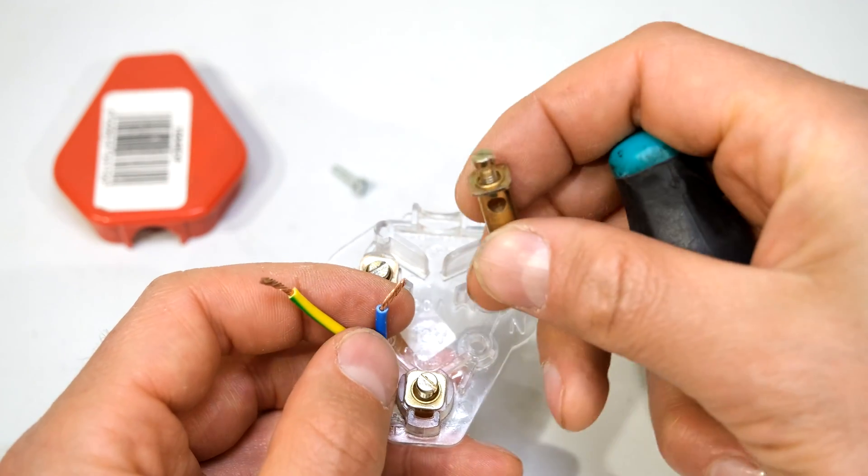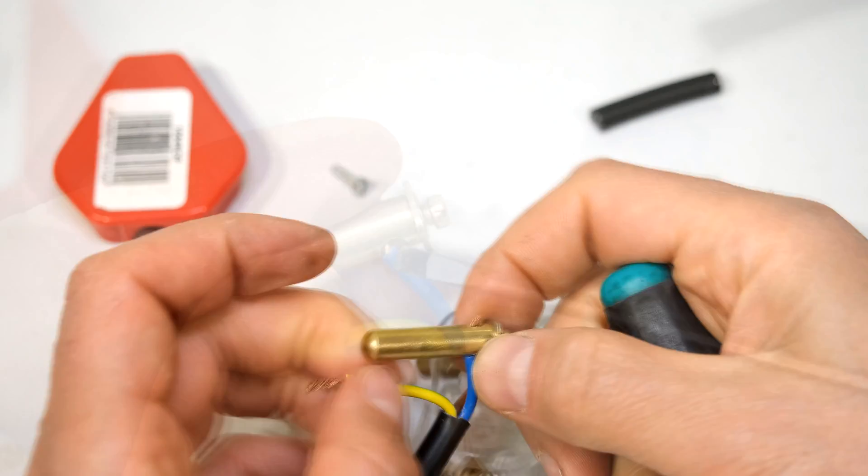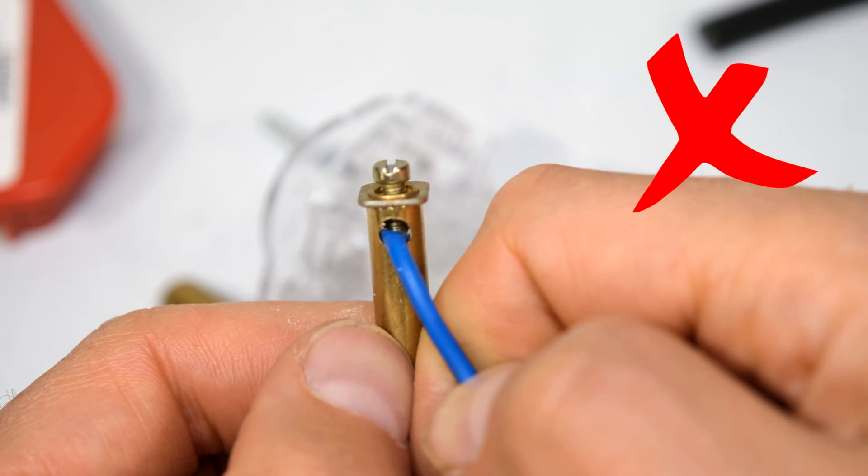If it's easier for you and your plug allows it, you can just remove the prong and wire it like this. Please note that the screw must fasten onto the copper. The screw must not fasten onto the jacket.